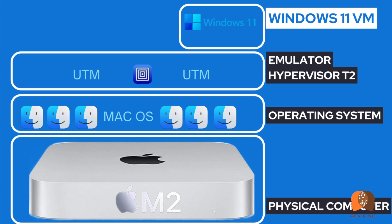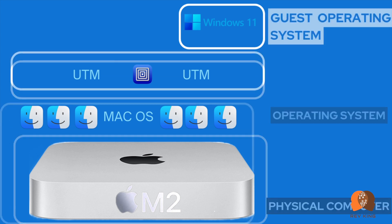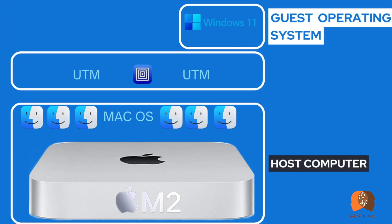Through the help of an emulator software like UTM, we can create a virtual machine on which we can run Windows as a guest operating system on M2 Macs. In other words, the M2 Mac will be the host computer, and Windows 11 that runs on the virtual machine will be the guest operating system. Having said that, let's dive right into the installation process.